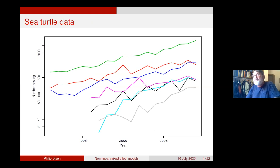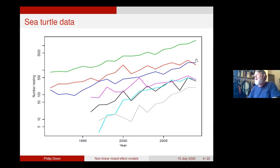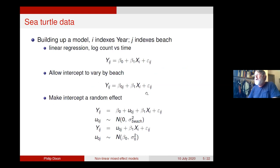There are the data. The y-axis is a log scale, and a straight line looks like a reasonable approximation. The seven different colored lines represent seven beaches. We'll start with linear regression: log count is a linear function of time plus additive error. Fitting one line to all seven data points clearly misses an important part of the variability between these lines.